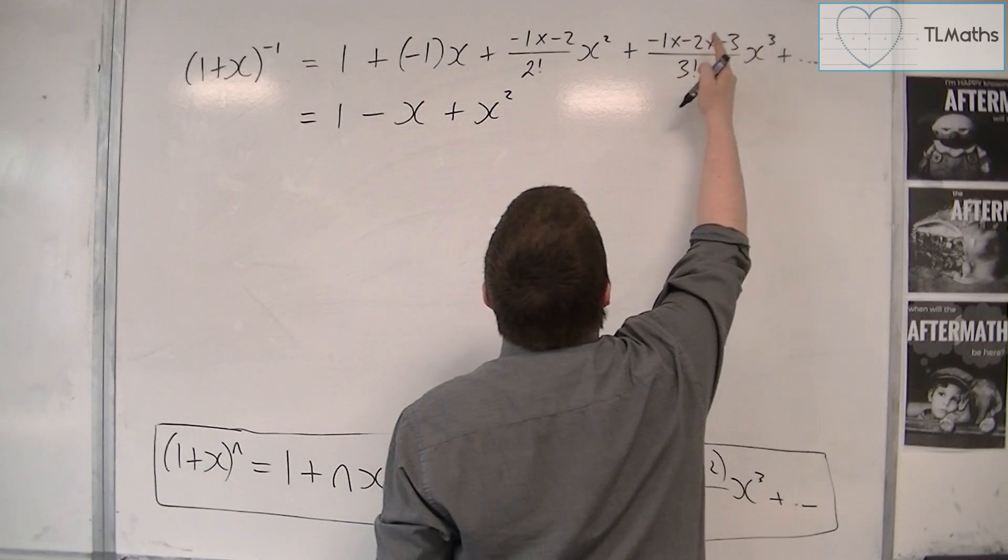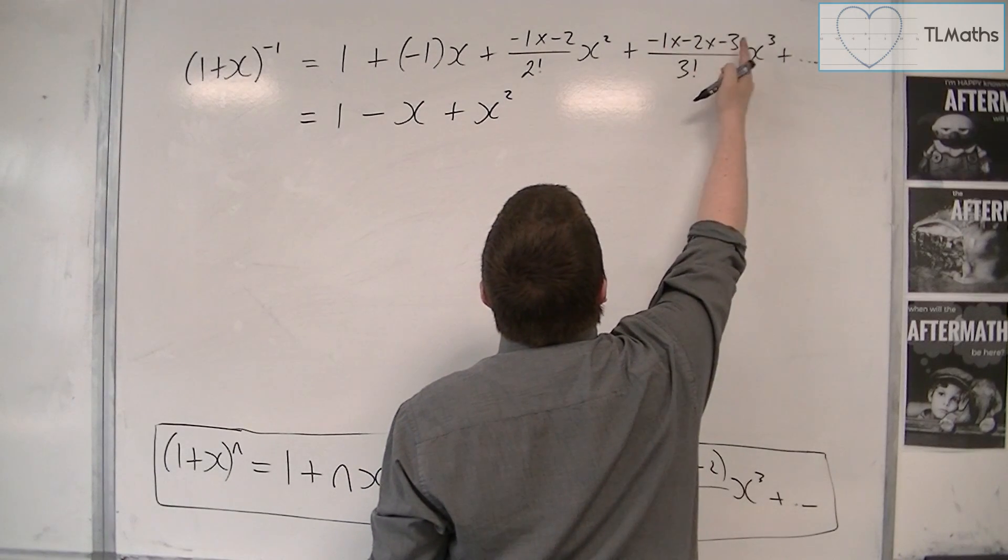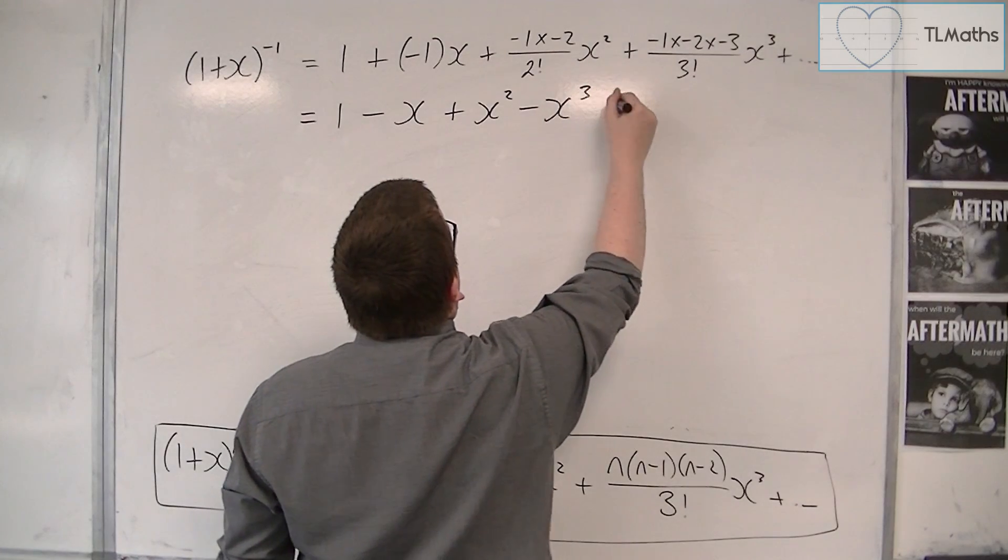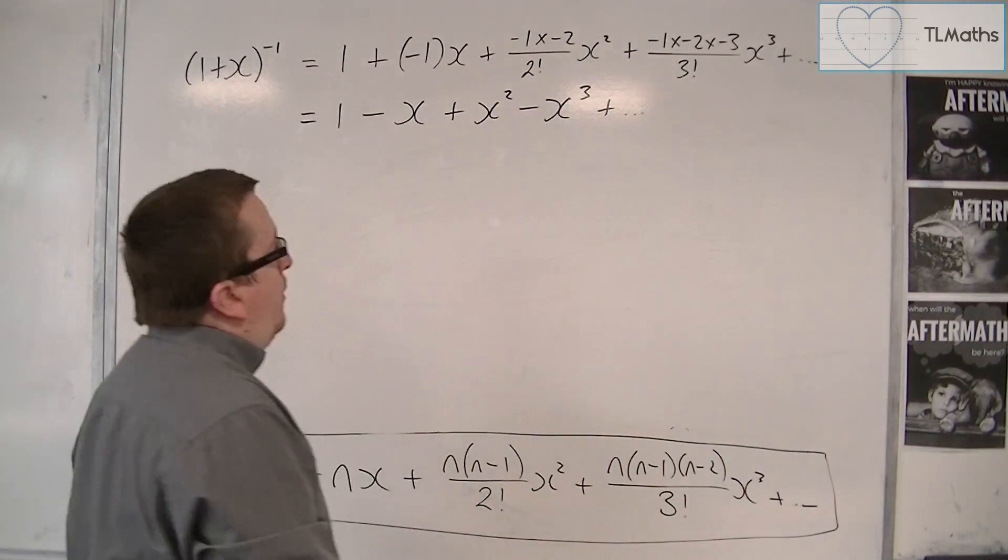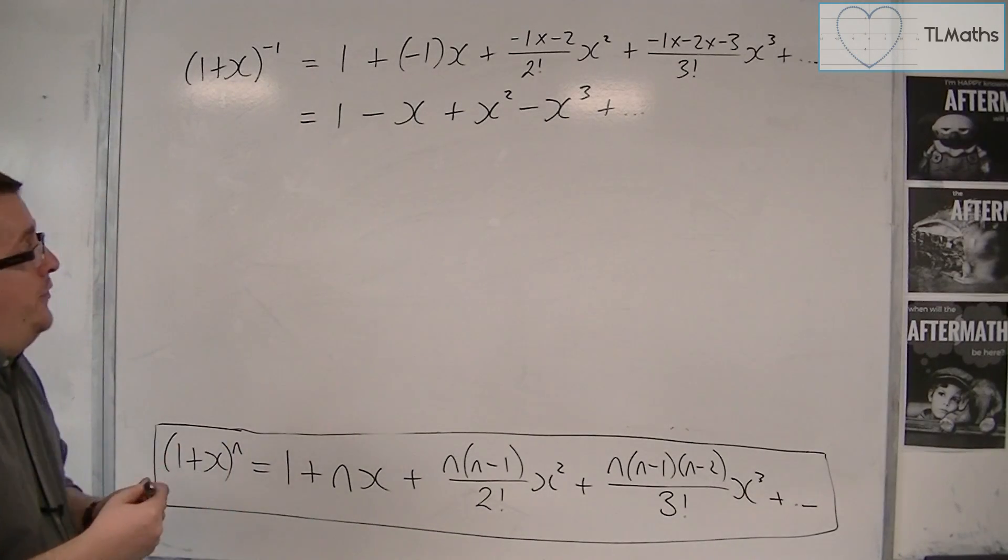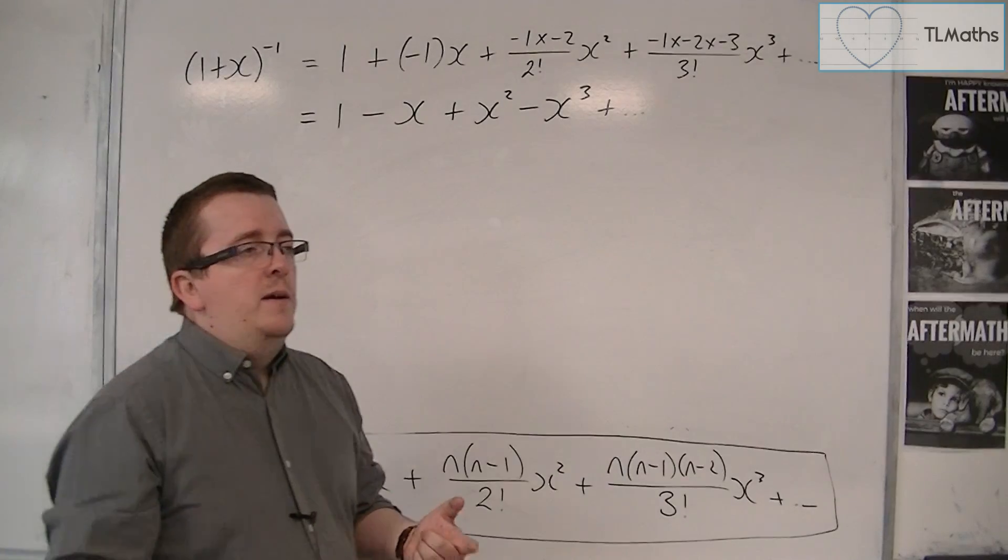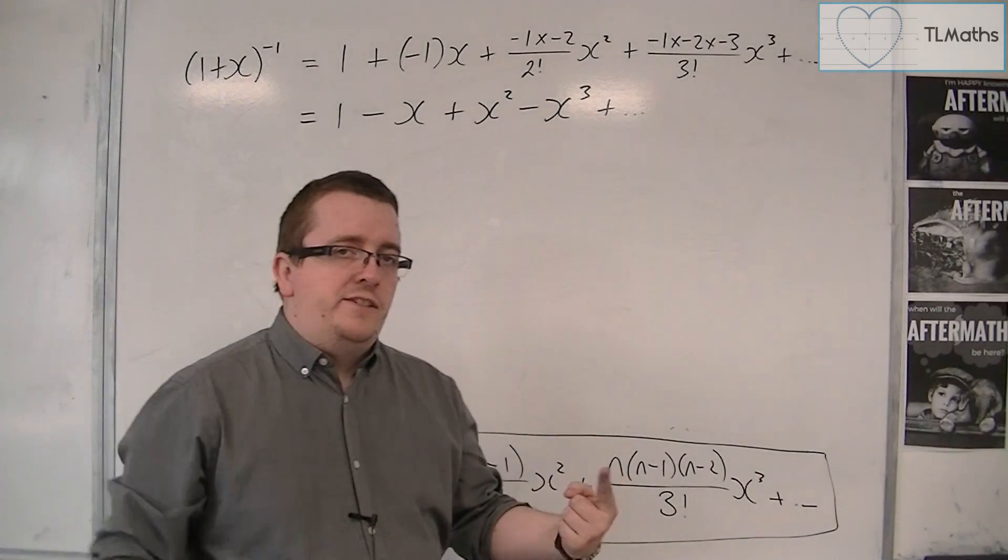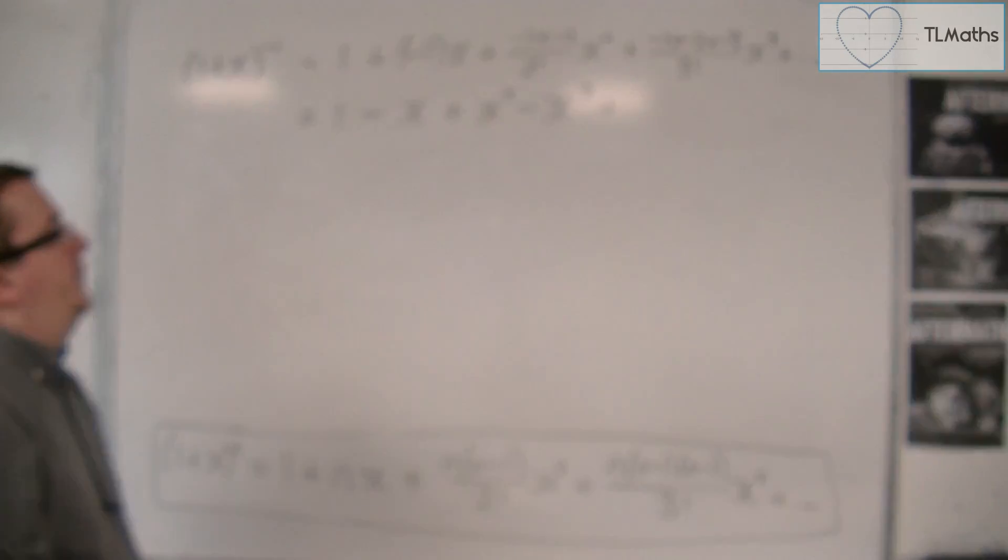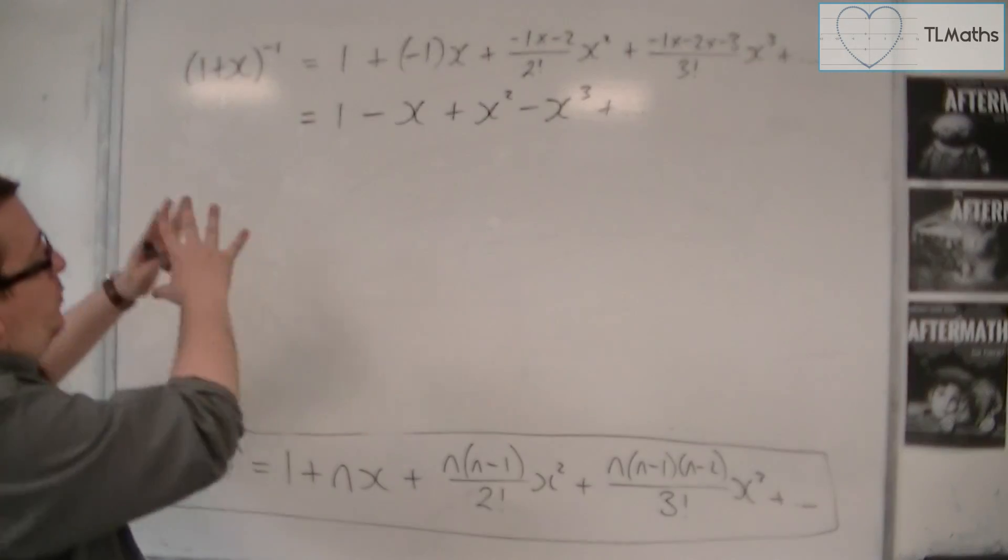And then we've got minus 1 times minus 2 times minus 3, so that's minus 6 over 6, so minus 1 times x cubed plus other terms. So, in actual fact, 1 plus x to the minus 1 is just 1 minus x plus x squared minus x cubed plus x to the 4 minus x to the 5 plus x to the 6, and so on. That is what it looks like.